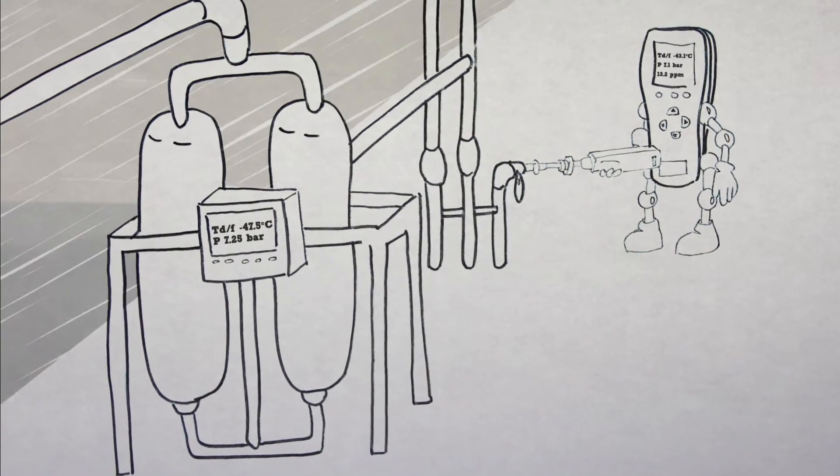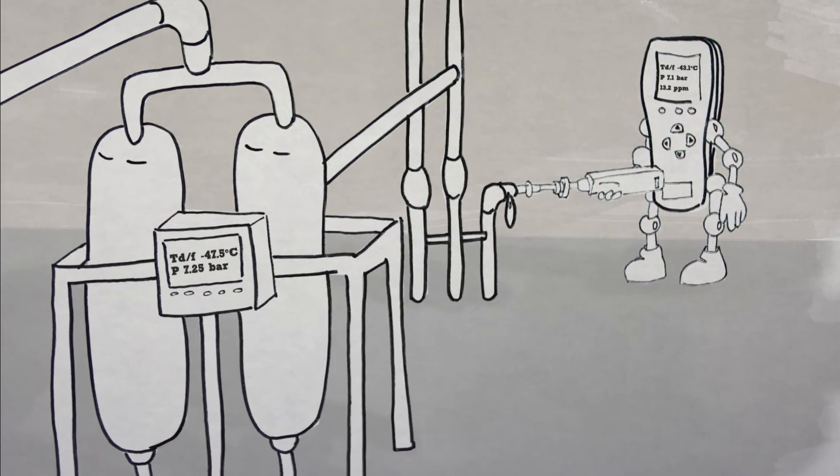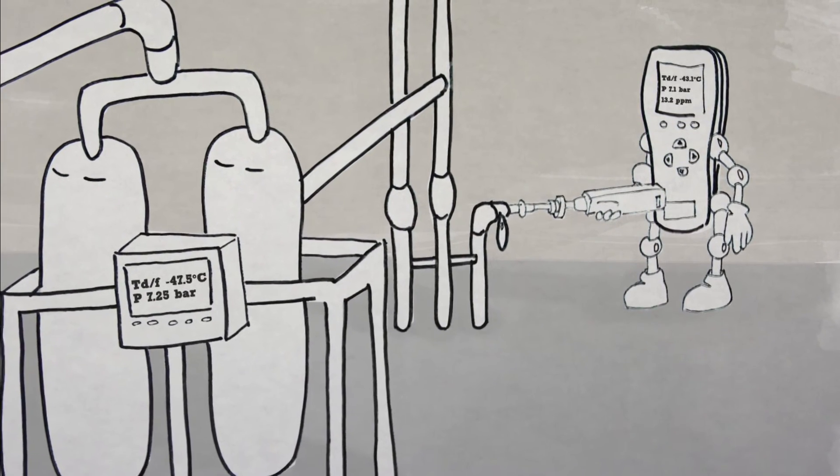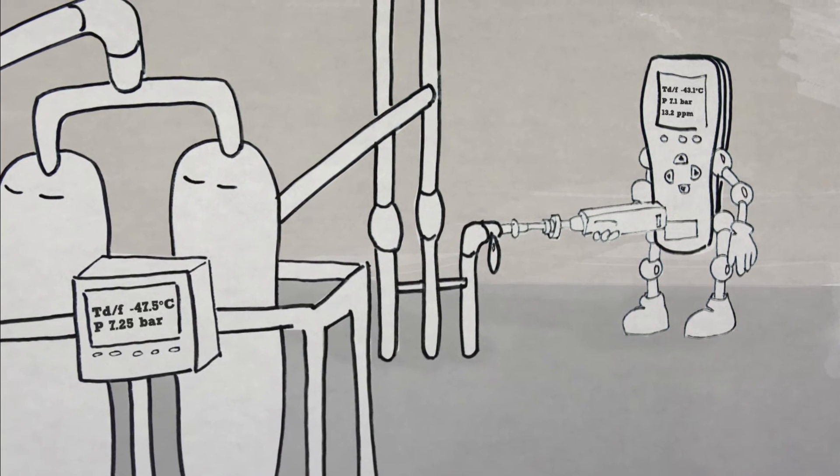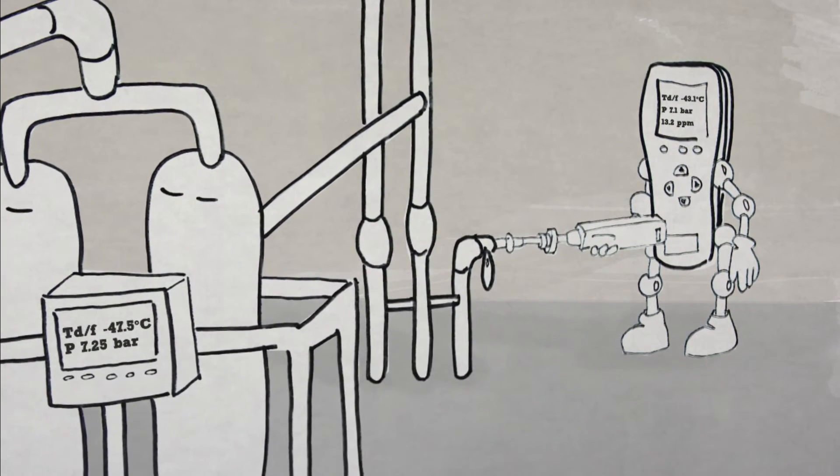With the DPT146 sensor, dew point and pressure can be measured simultaneously, allowing for real-time pressure compensations for calculations of parts per million or atmospheric dew point.